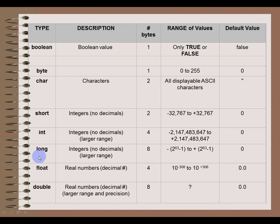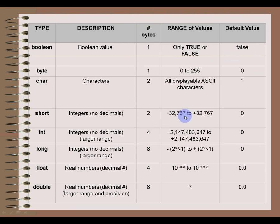The next three types all store integer values — numbers that do not have decimals. They differ in the range of values you can store and the amount of memory they require: the larger the range, the more memory it takes. Generally, you want to use the type with the smallest range that still fits the maximum values you'll need. For example, if I wanted a variable to store a person's age, I would use a byte, because no one has lived to be more than 255 years old, and it uses the smallest amount of memory.